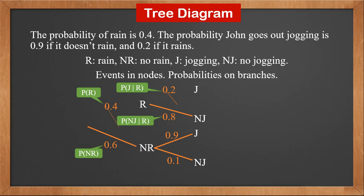Now let's look at the first path R-J. If we multiply the probabilities along the path, we get the probability of rain and jogging, because P(R and J) is P(R) times P(J|R). This is 0.4 times 0.2, which is 0.08.